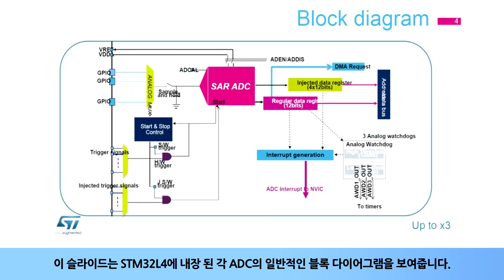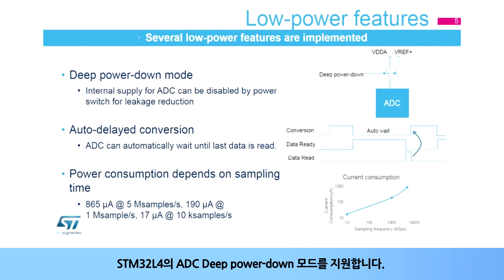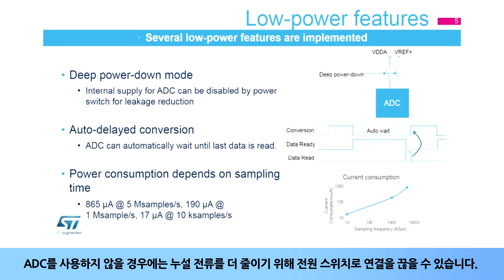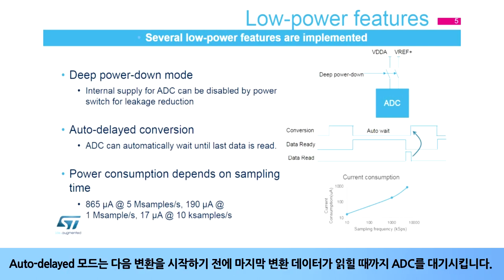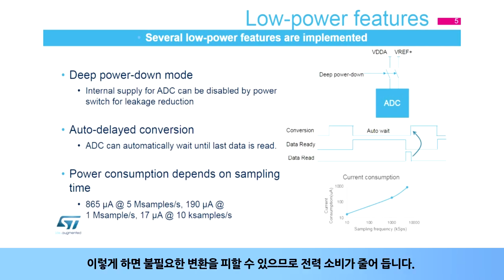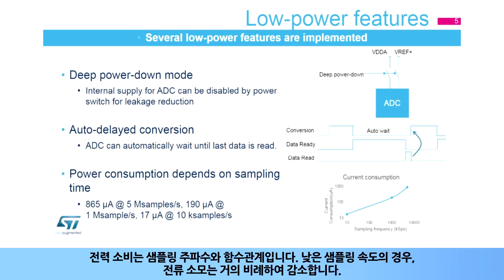The STM32L4's ADCs support a deep power-down mode. When the ADC is not used, it can be disconnected by a power switch to further reduce the leakage current. Auto-delayed mode makes the ADC wait until the last conversion data is read before starting the next conversion. This avoids unnecessary conversions and thus reduces power consumption. The power consumption is a function of the sampling frequency, and for low sampling rates, the current consumption is reduced almost proportionally.